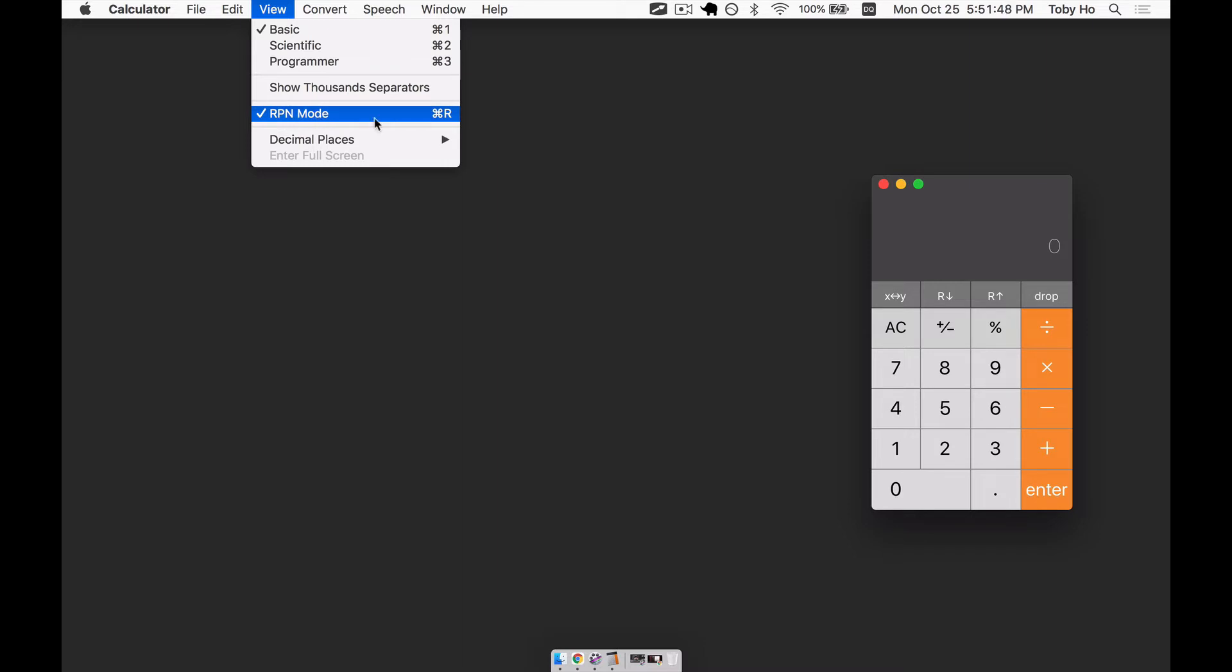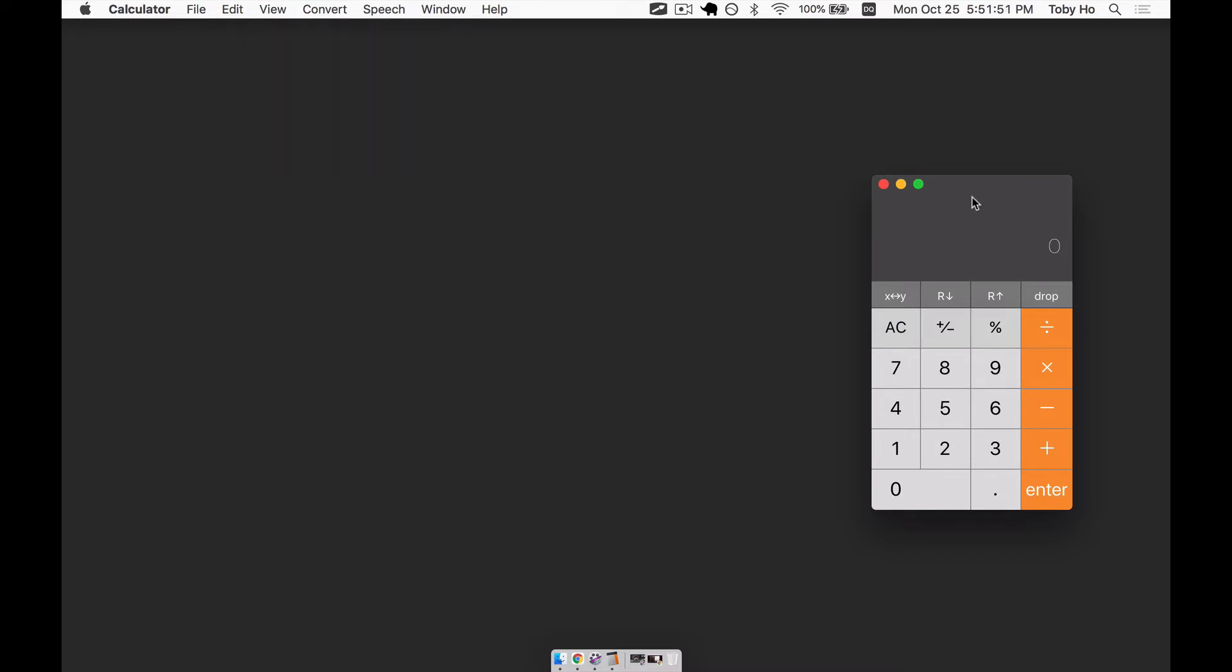You can see that the reverse Polish notation mode, RPN, has been turned on. To show you how to use it, let's first do a simple calculation, such as 3 plus 4. First, we would rewrite it in reverse Polish, which would look like 3, 4 plus. With this calculator interface, what you would do to distinguish 3 and then 4, distinguish that from 34, is you would type enter after typing 3. And then you type 4 and then plus. And then it would do the calculation. So let's do that. So 3, enter, 4, and then plus.